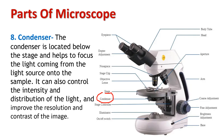The condenser is located below the stage and helps to focus the light coming from the light source onto the sample. It can also control the intensity and distribution of the light to improve the resolution and contrast of the image.